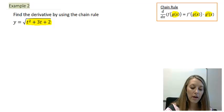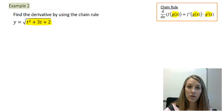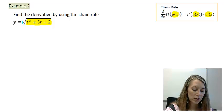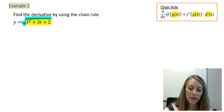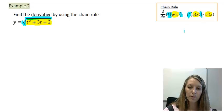Whatever is left over is going to be my outside function. In this case, my leftover is going to be the square root of x, and that's what we'll identify as my f in my chain rule.